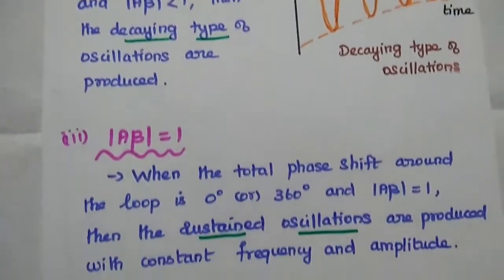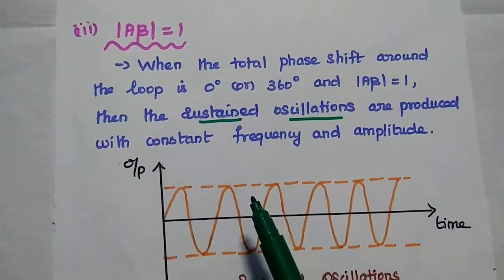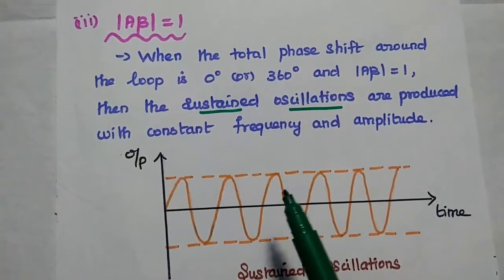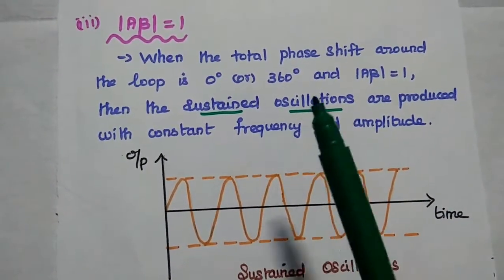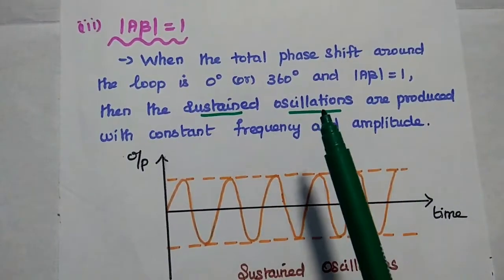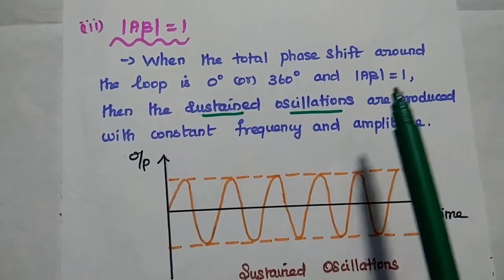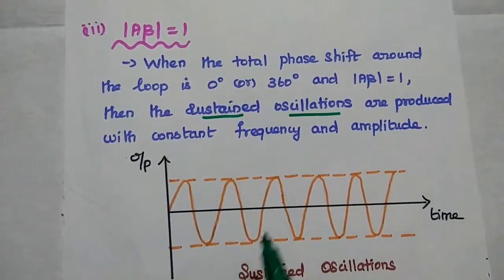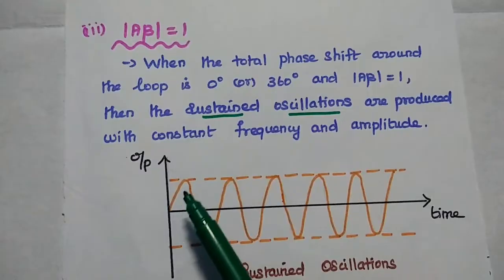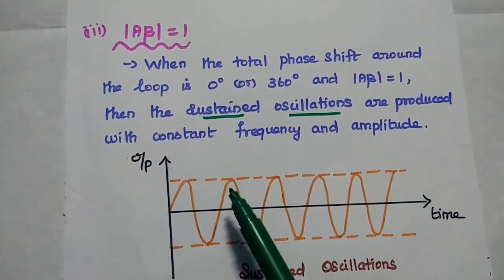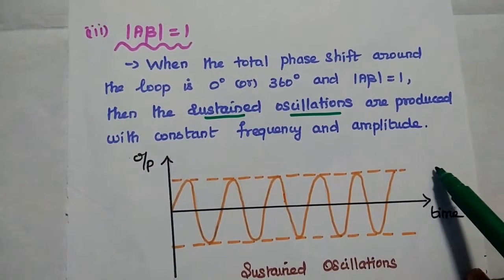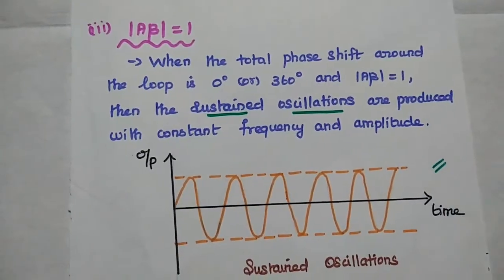The last case: if Aβ is equal to 1, that is the exact condition of the Barkhausen criterion. When the total phase shift around the loop is 0 degrees or 360 degrees and Aβ is equal to 1, sustained oscillations are produced with constant frequency and constant amplitude. This is what we require for signal generation.